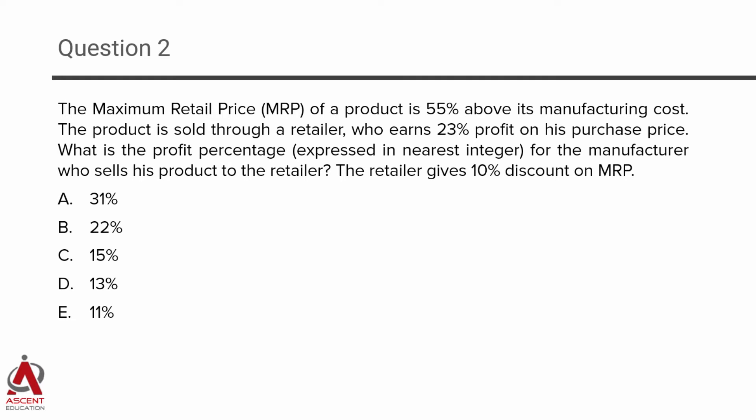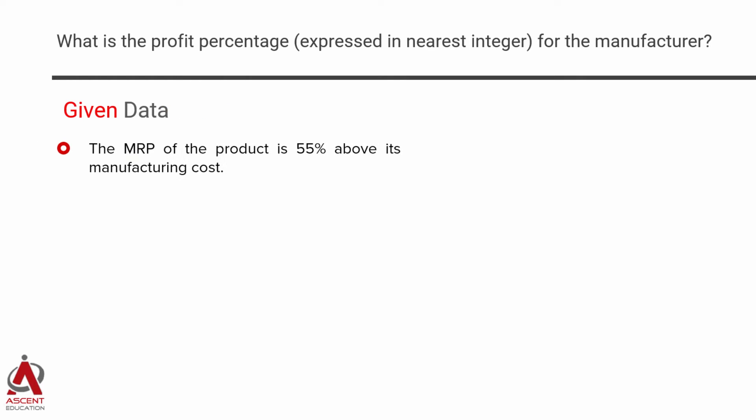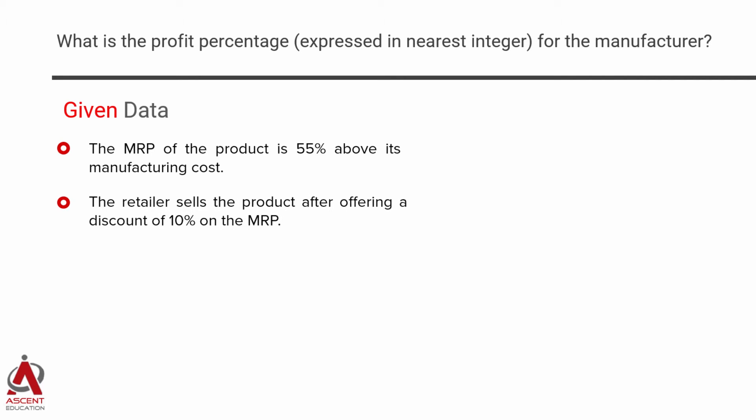We'll quickly jot down the 3 points given in this question. The first one is: the MRP of the product is 55% above its manufacturing cost. Second key point: the retailer sells it after offering a discount of 10% on the MRP. The third point: the retailer makes a 23% profit on his purchase price.